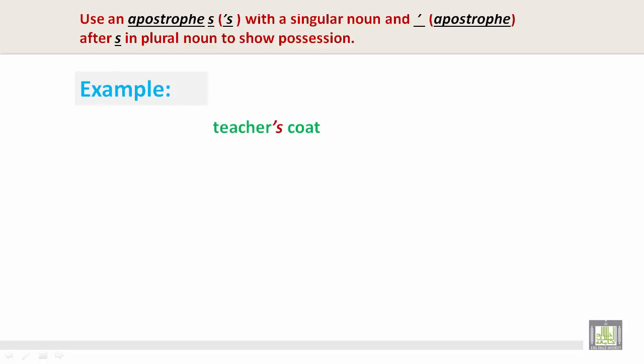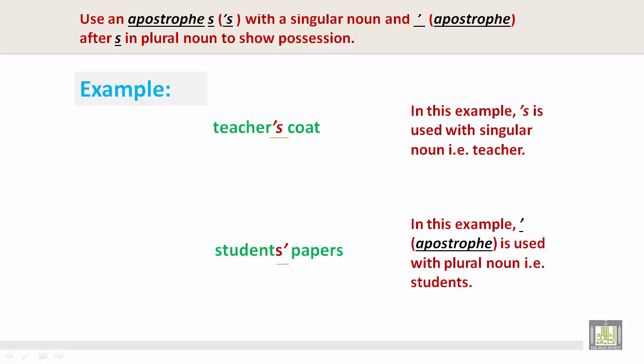For example, teacher's coat. In this example, S is used with a singular noun, teacher. Students' papers. In this example, the apostrophe is on the outside of the S and is used with a plural noun. For example, students.